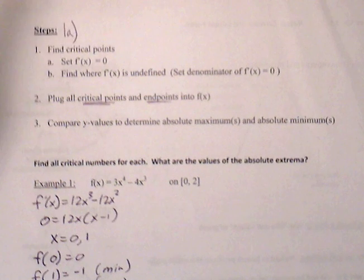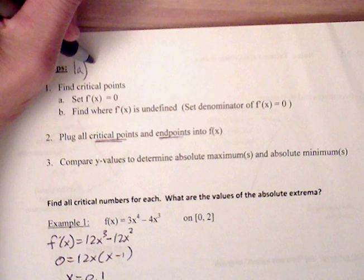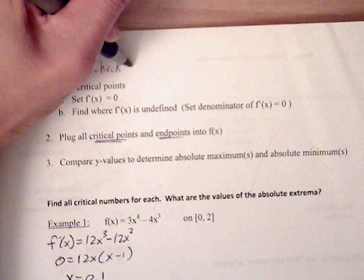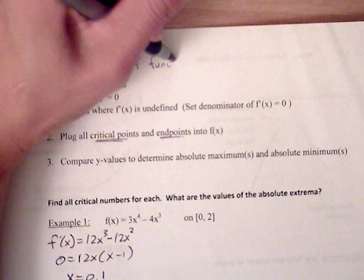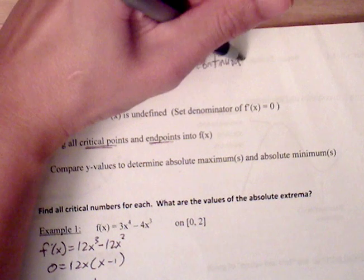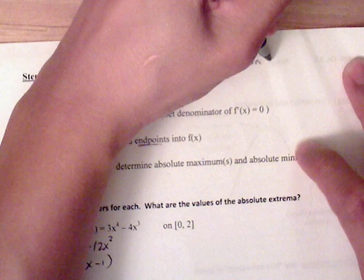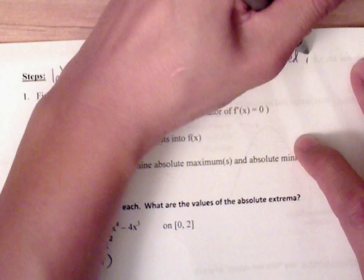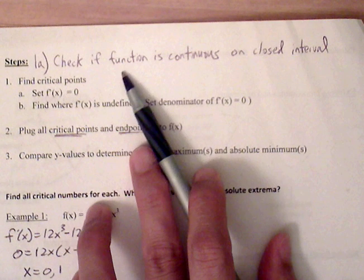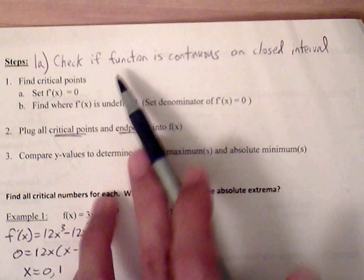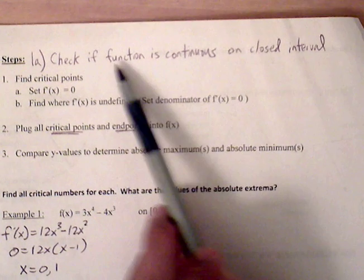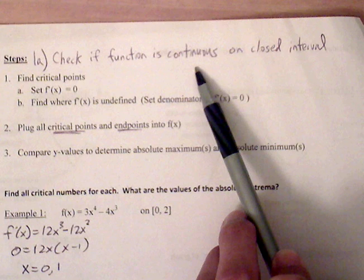There's a step that was left off — the very first step should be to test if the function is continuous, and not only continuous, but continuous on the closed interval. It's possible there may be a vertical asymptote or a break in the graph, but as long as what's between the closed interval is continuous, then the Extreme Value Theorem will apply and we can continue with the problem.